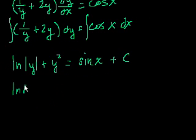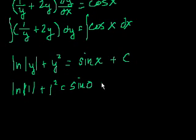So ln of the absolute value of 1 plus 1 squared is equal to sine of 0 plus c. The natural log of 1, e to the what power is 1? Well, 0. Plus 1. Sine of 0 is 0. It's equal to c. So we get c is equal to 1.